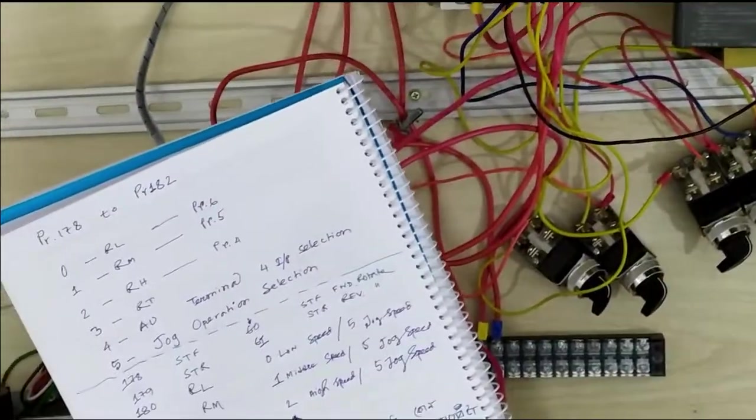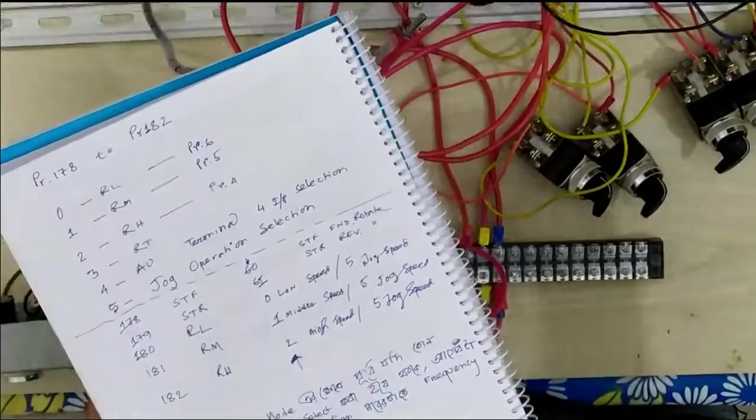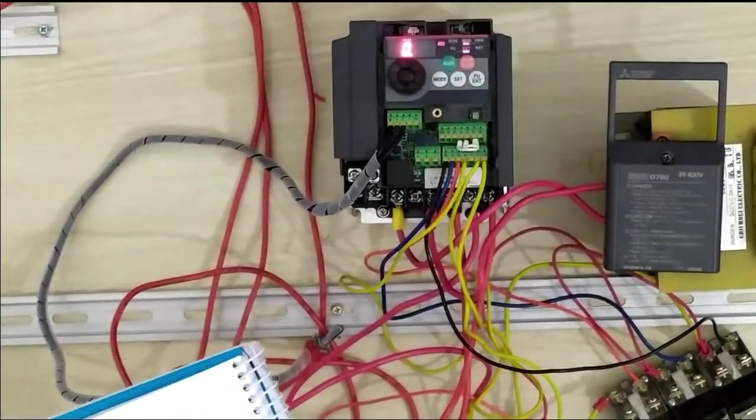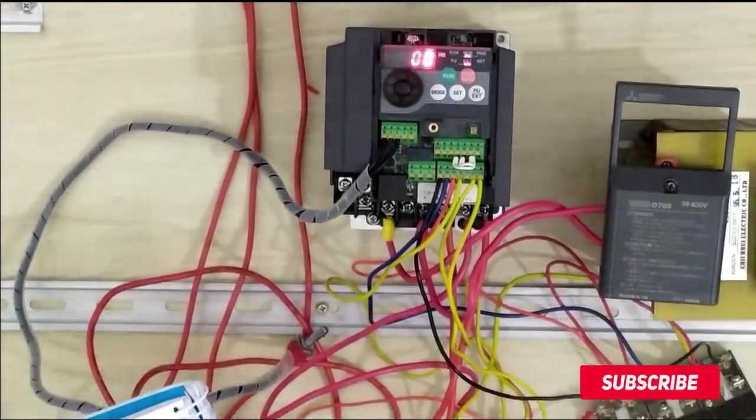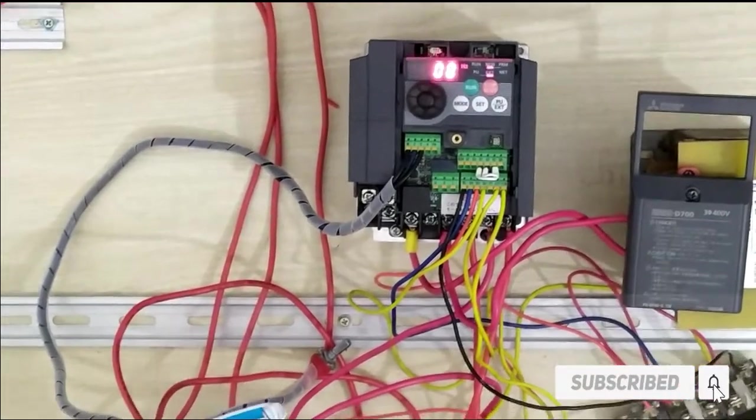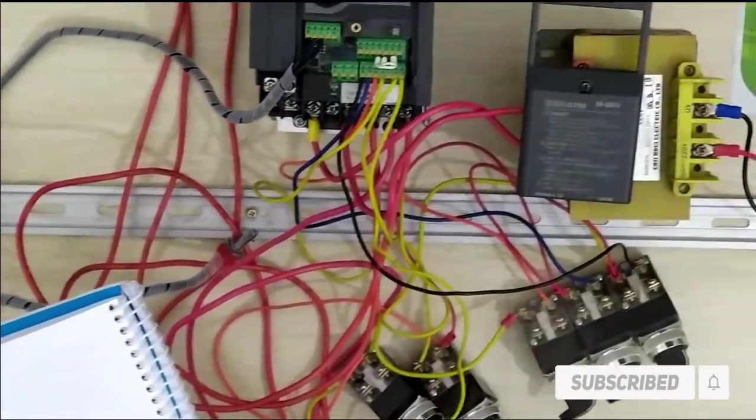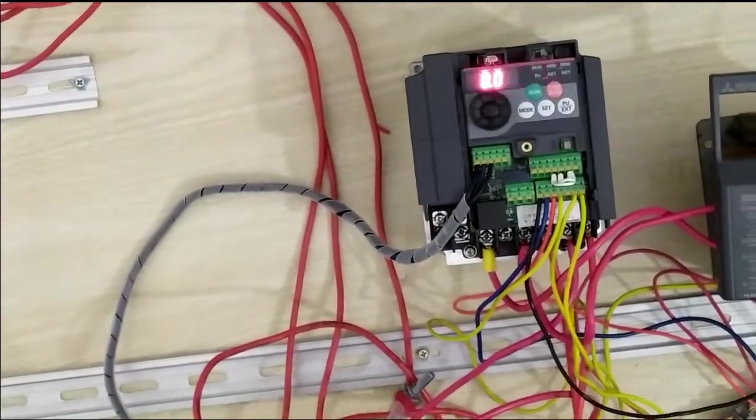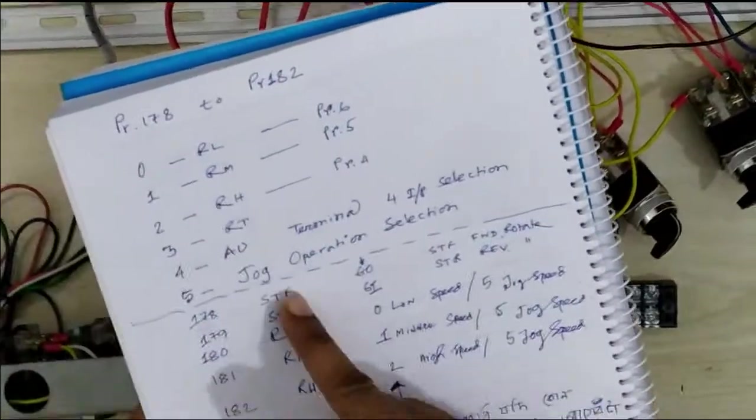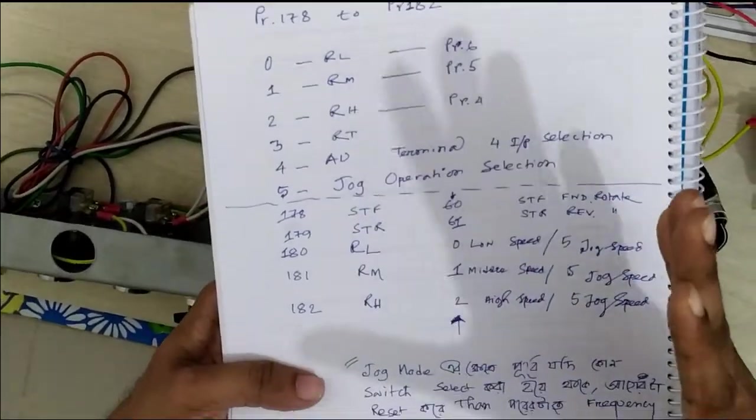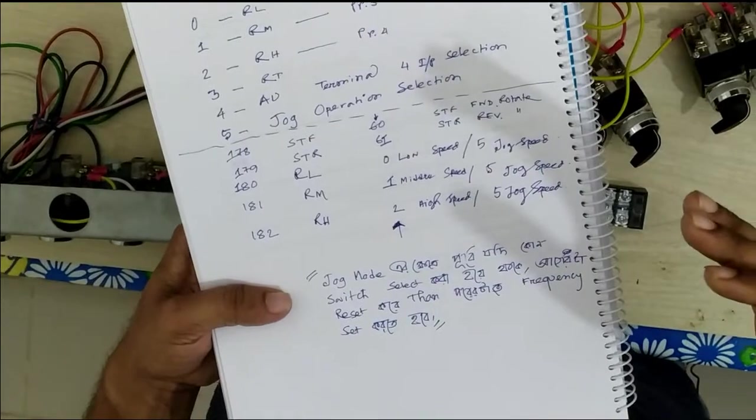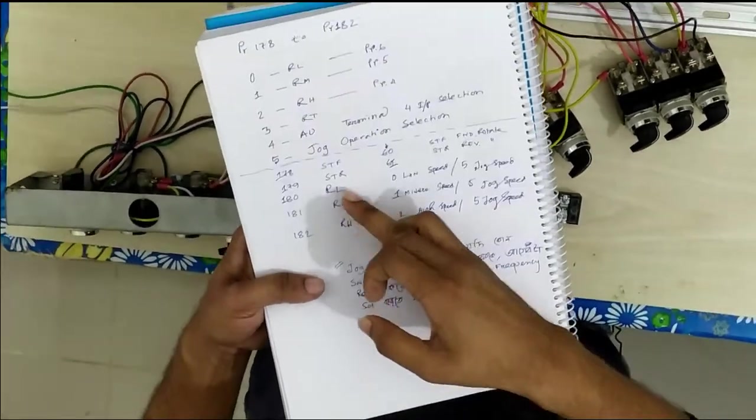This facility on induction motors provides fixed frequency control for any kind of application. When you need a fixed frequency for your facility or any kind of forward actions, this is very useful. STF and STR control forward and reverse, and now I'll set the jog mode using RL, RM, or RH.